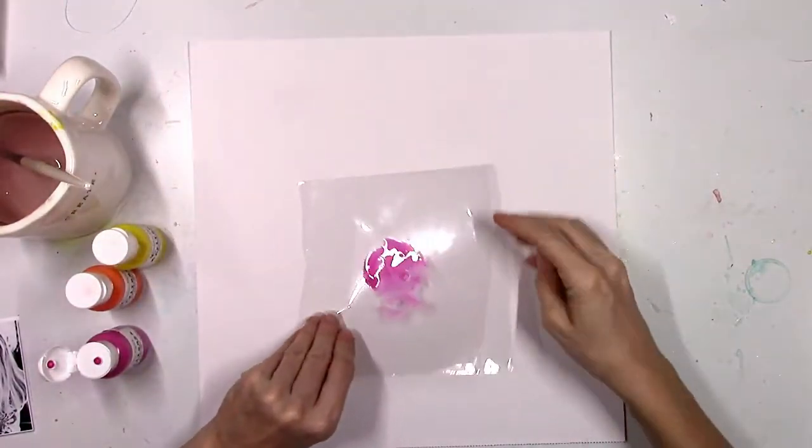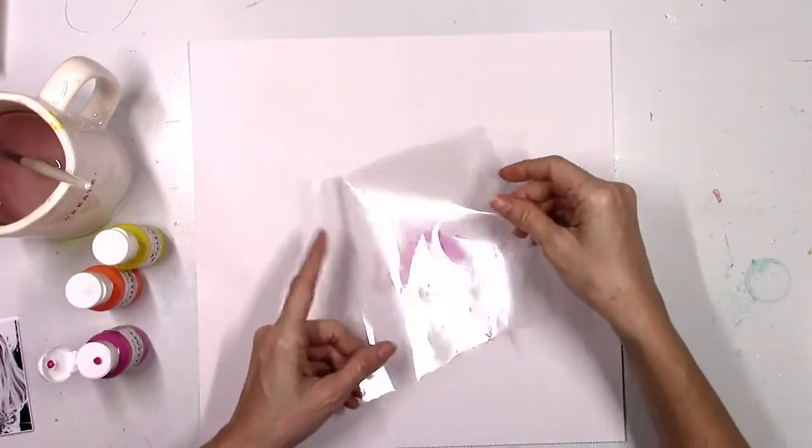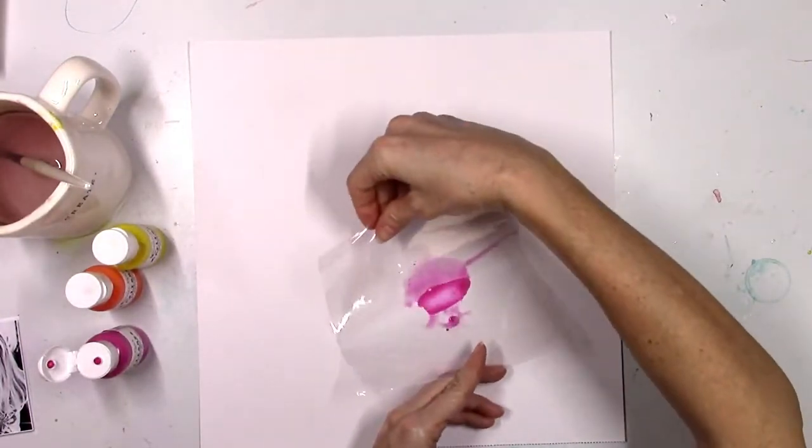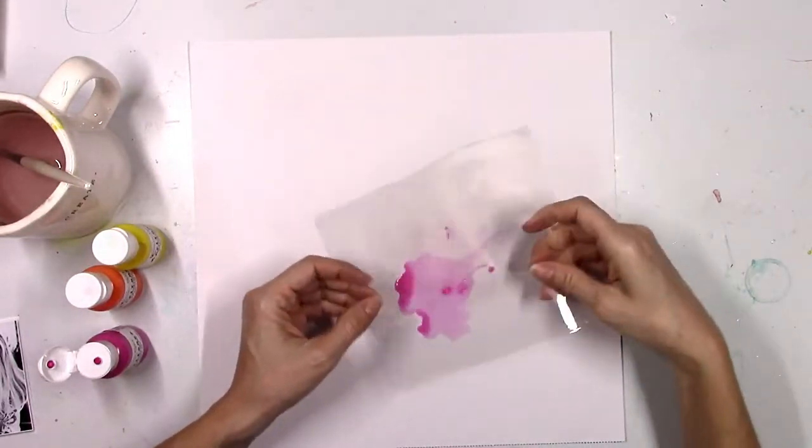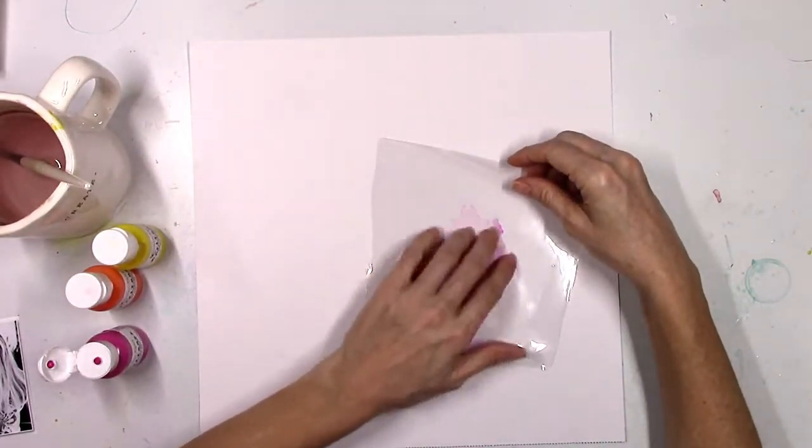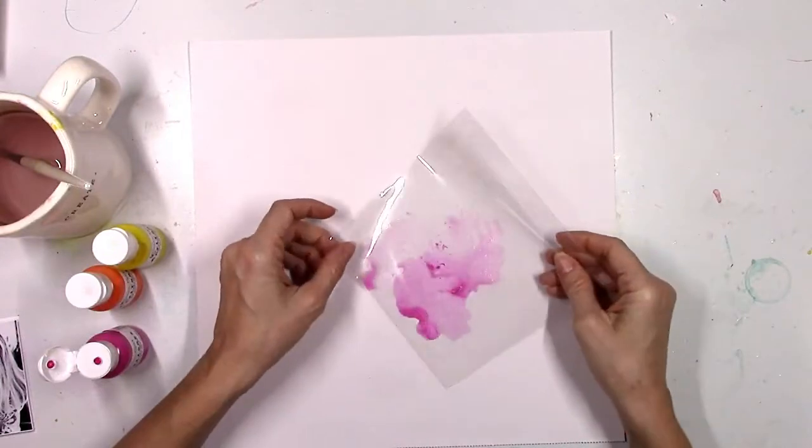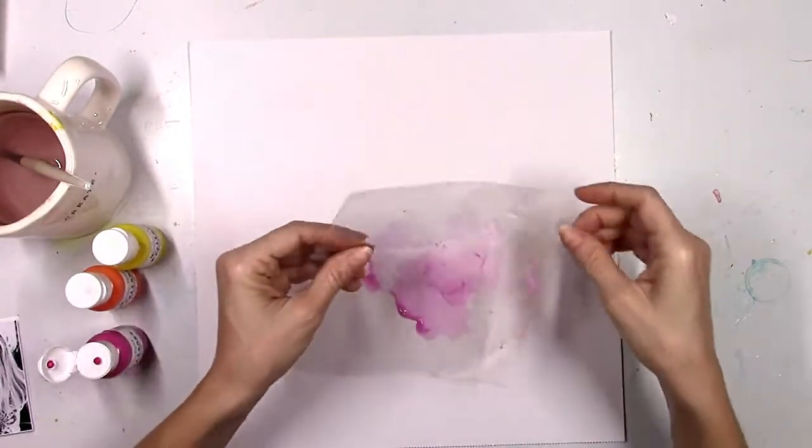So I just squirted a little bit of the paint on the plastic, added a little bit of water, mixed it together, and I'm going to flip that plastic over and smush it down. You may also call this the smushing technique. It's not technical, it's just plastic packaging and color.